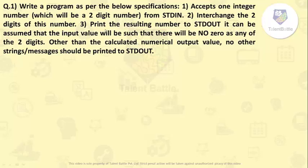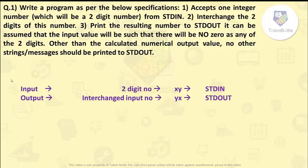And the third condition they have mentioned is the output should be printed in such a manner that there will be no zeros in the input number and there will be no strings or messages printed to stdout. So they want only the interchanged number to be printed to stdout.